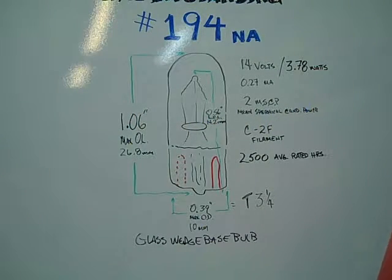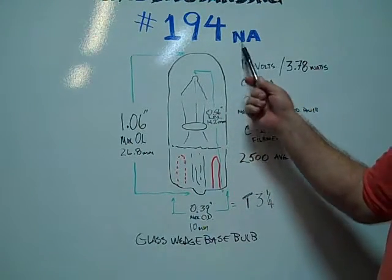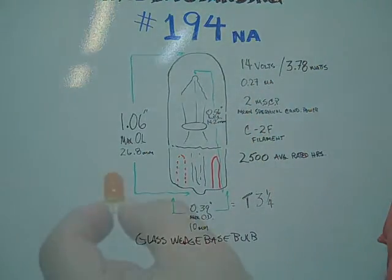Hi, here at Bulb Town, we want to help you understand and identify the number 194 natural amber or NA miniature glass wedge-based bulb.